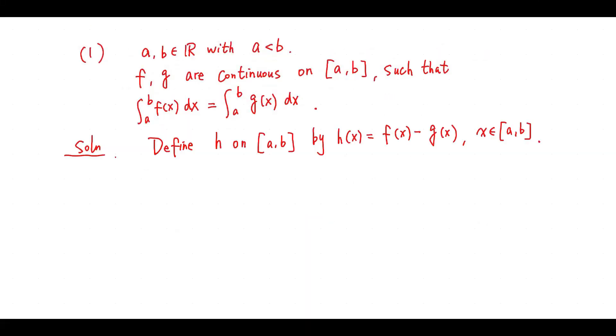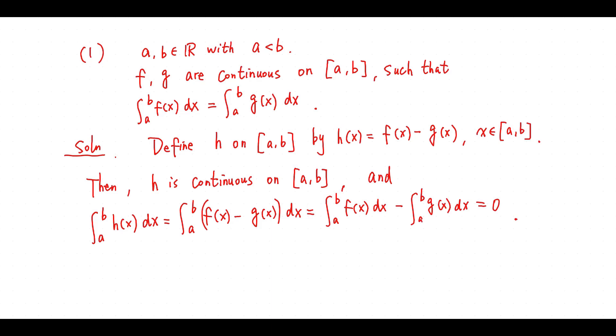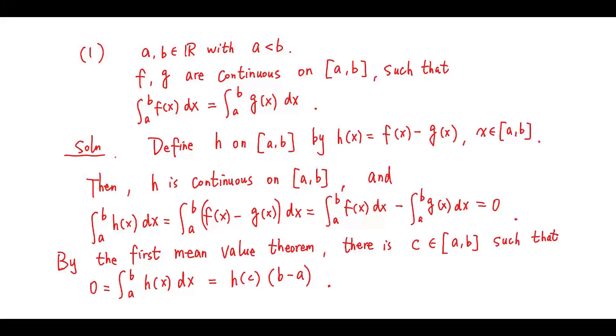Define a function h by h(x) = f(x) - g(x). Then h is continuous on [a, b], and the integral of h equals 0. By the first mean value theorem, there is a c in [a, b] such that the integral of h equals h(c) times (b - a).